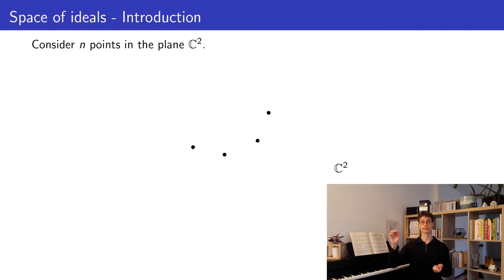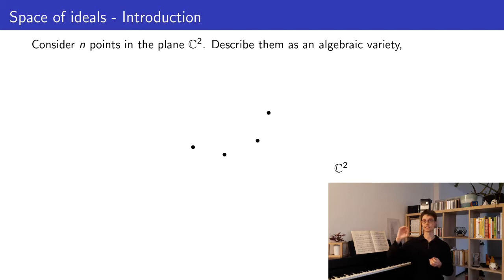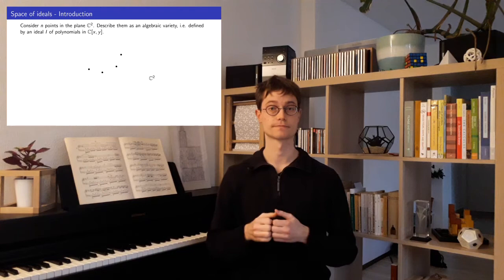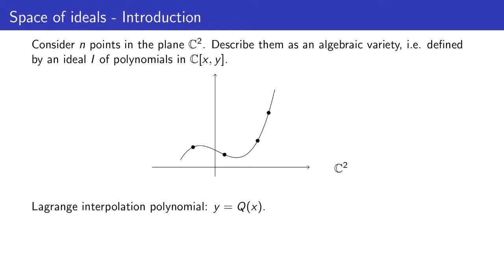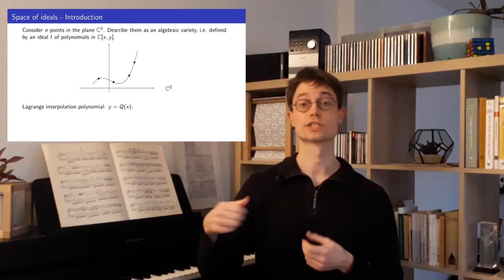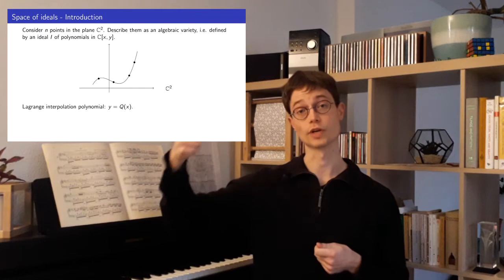We consider n points in the complex plane C². We want to describe these points as an algebraic variety, meaning that we try to describe these points as the intersection of polynomials. Formulated otherwise, we want to describe these endpoints as the zero locus of an ideal of polynomials. Let's see how this works when we take endpoints in a generic position. In that case, there will be a unique polynomial called the Lagrange interpolation polynomial, y equals q of x, which is of degree n minus 1 and which will interpolate these endpoints.